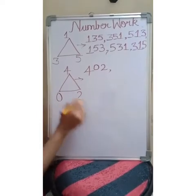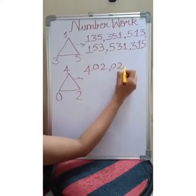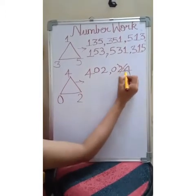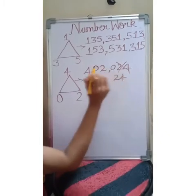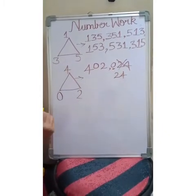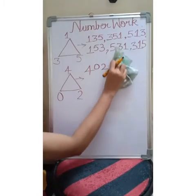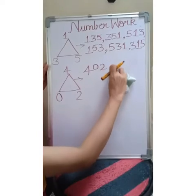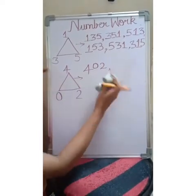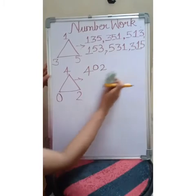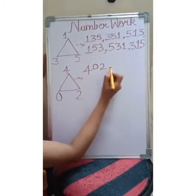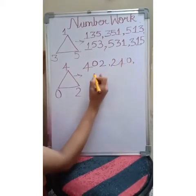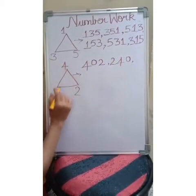Now you might say zero, two, four — but no, children, this is wrong. Because zero, two, four is just twenty four. Zero has no value, so never start with the digit zero. So we go on to the next digit, that is two. Two, four, zero — so this number is two hundred and forty.